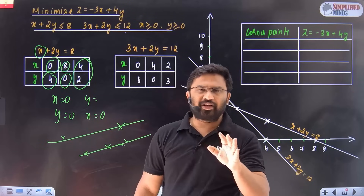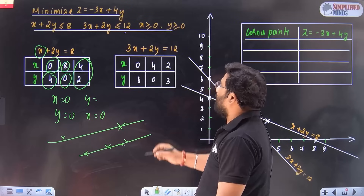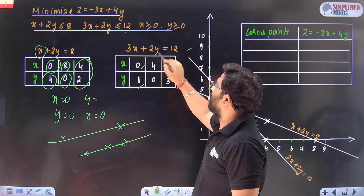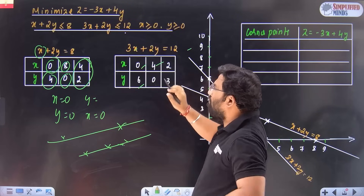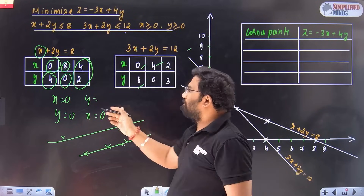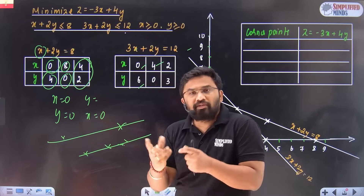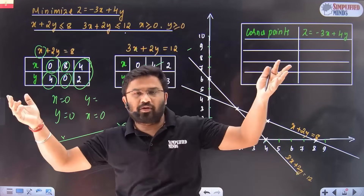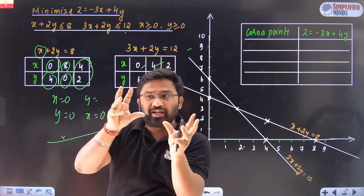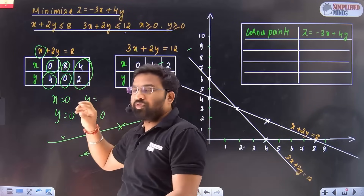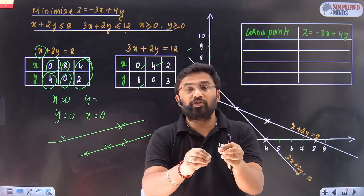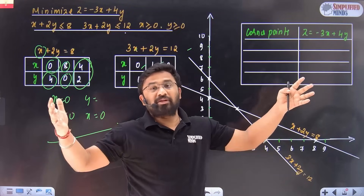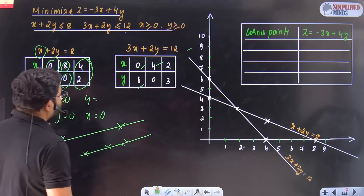If all three points align on the same line, you've done it perfectly. You should be very careful. For 3x plus 2y, put x as 0, get the y-value; put x as a suitable value and get the other point. Try to give values that produce small numbers like 4 and 8, so all points are nearby and you can plot the graph properly — scale is also very important.